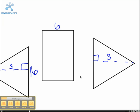So for the rectangle, find the base times height, which is 6 times 16, which equals 96.